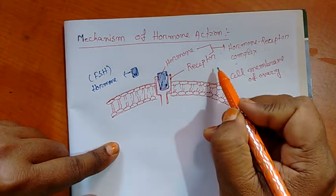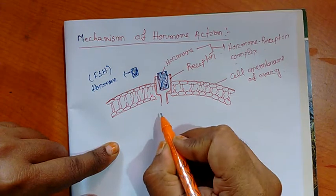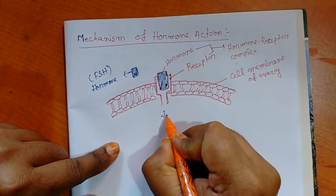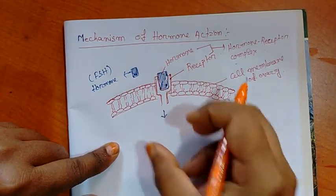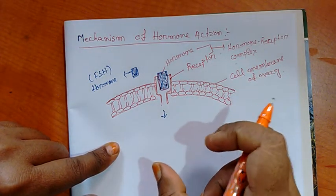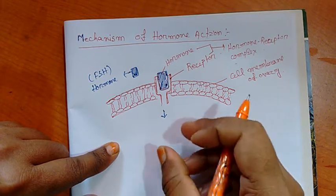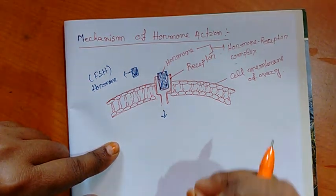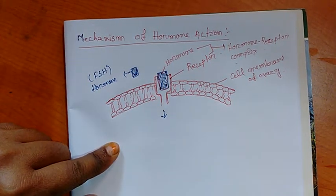After forming hormone receptor complex, response of the target tissue starts. But it cannot enter into the cytoplasm, because receptor has no capacity to bring the hormone into the cytoplasm and cell.